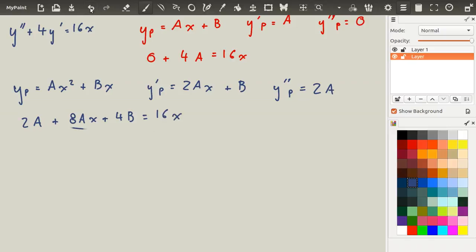We have an x on the left-hand side and an x on the right-hand side. So for x, 8ax is equal to 16x. So a is equal to 2.